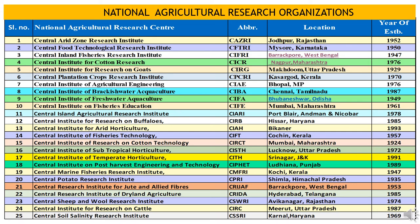Eighth is CIBA — Central Institute for Brackishwater Aquaculture — headquartered at Chennai, Tamil Nadu, established in 1987. Ninth is CIFA — Central Institute of Freshwater Aquaculture — headquartered at Bhubaneswar, Odisha, established in 1949. Tenth is CIFE — Central Institute on Fisheries Education — headquartered at Mumbai, Maharashtra, started in 1961. Eleventh is CIARI — Central Island Agriculture Research Institute — located at Port Blair, Andaman and Nicobar Islands, established in 1978.